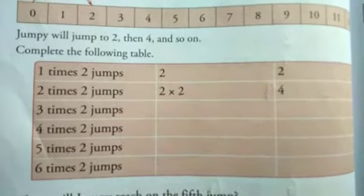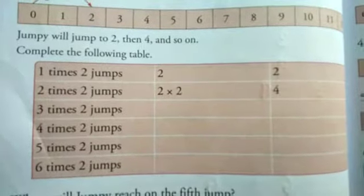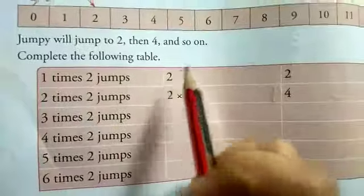Page number 88. Jumpy will jump 2, then 4 and so on. Complete the following table. 1 times 2 jumps: 2.